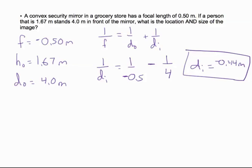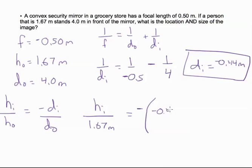Then we can find the height of the image with this equation. Our meters cancel out and our negatives cancel out. We do 0.44 divided by 4 and then times 1.67. We get that our image is 0.18 meters high and it's upright because it's positive.